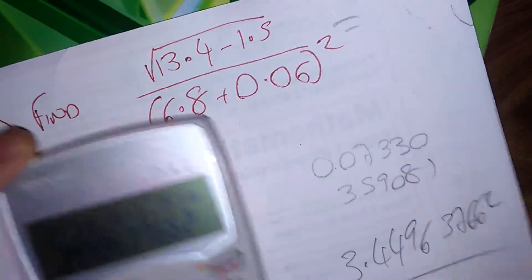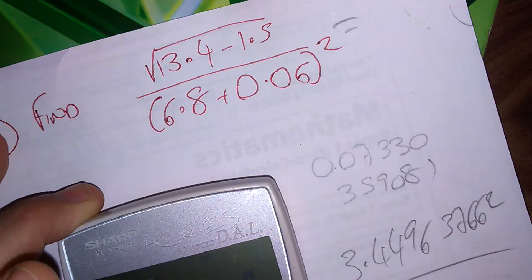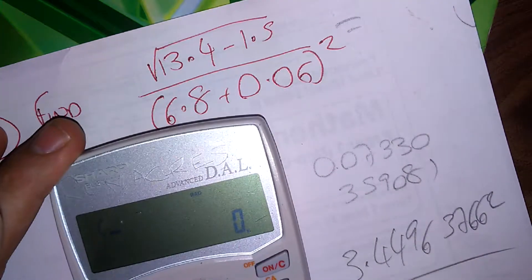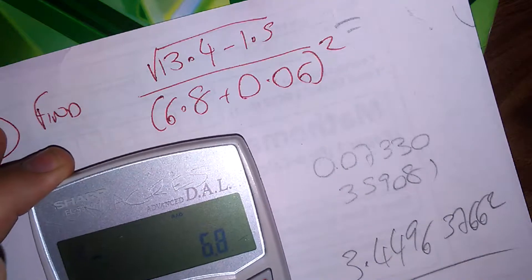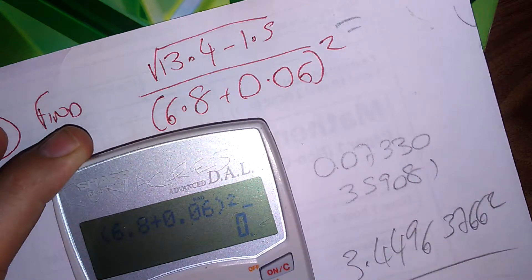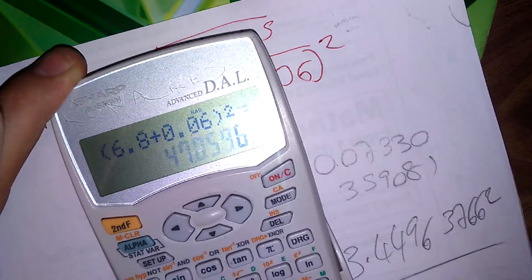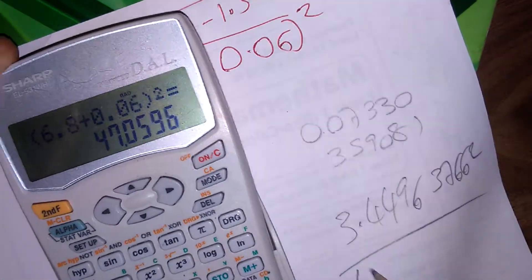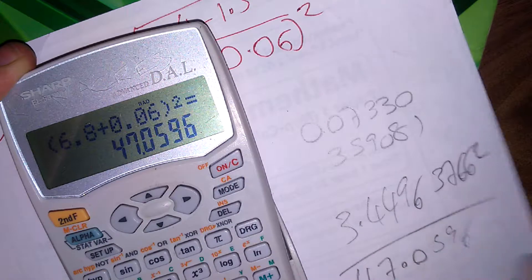Now I'm going to do the denominator. The denominator is already in brackets, so I just need to type that in. Bracket 6.8 plus 0.06, all of it squared. That's definitely my denominator. Press equals: 47.0596.